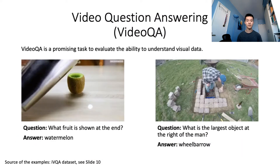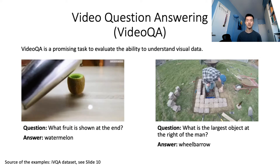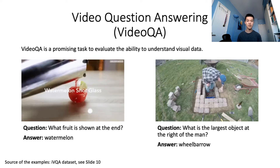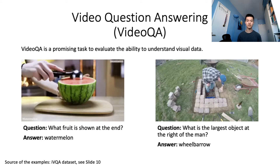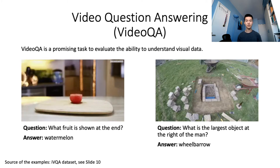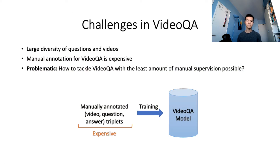Video question answering, or video QA, is a promising task to evaluate video understanding. Answering a question about a video requires a detailed understanding of the visual content and its association with natural language. For instance, the example on the left requires temporal reasoning, as multiple fruits are displayed during the video. The example on the right requires spatial reasoning to identify an object localized relatively to the man. Video QA is difficult because of the diversity of questions that one may ask, requiring the ability to recognize actions, objects, colors, and different spatial-temporal granularities.